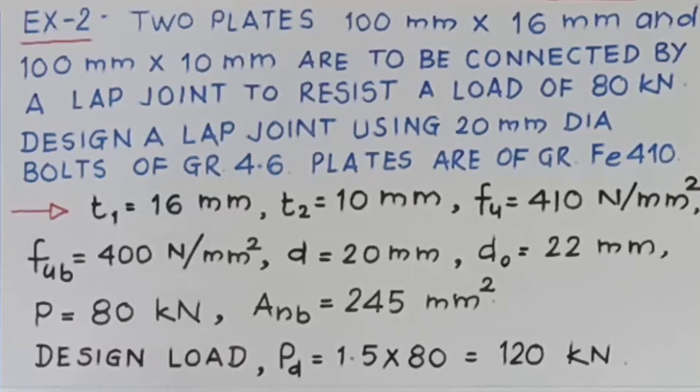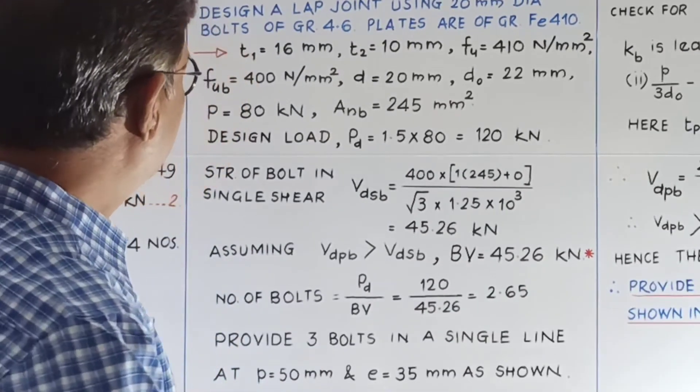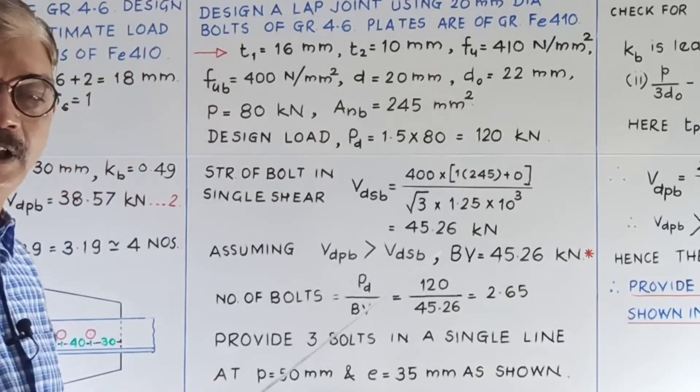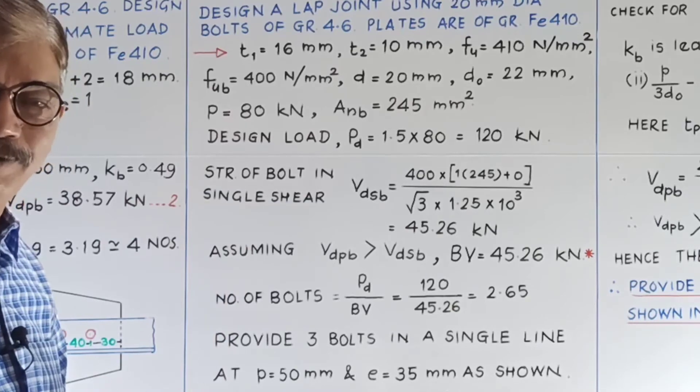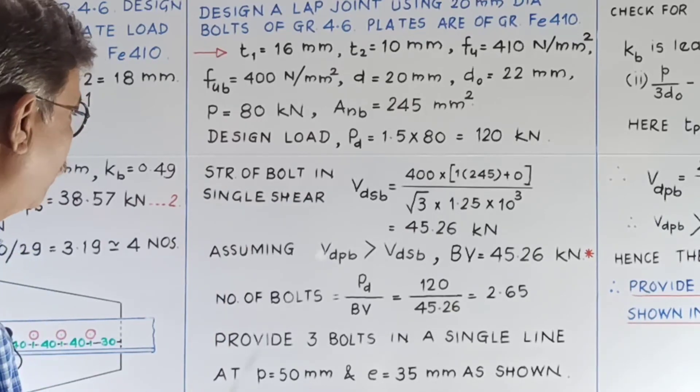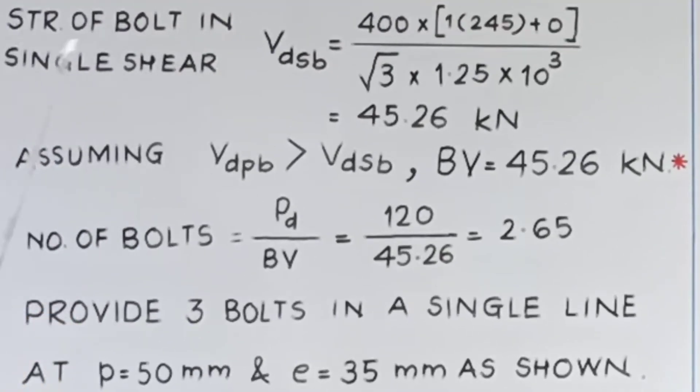Now first we will have to calculate the design load. What is the design load? Design load will be working load into 1.5, that is 120 kilonewton. Now this is also lap joint, so definitely the bolts will be in single shear, so NN is equal to 1, NS is equal to 0.